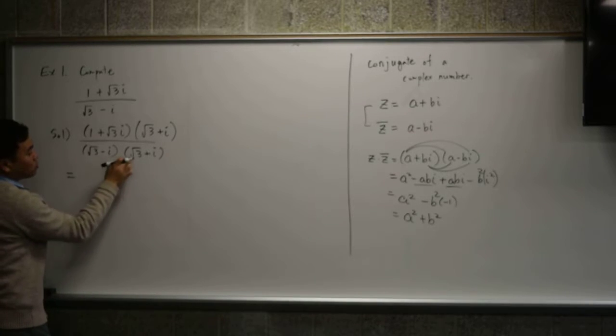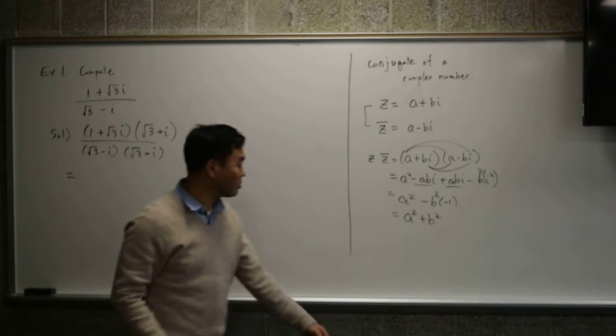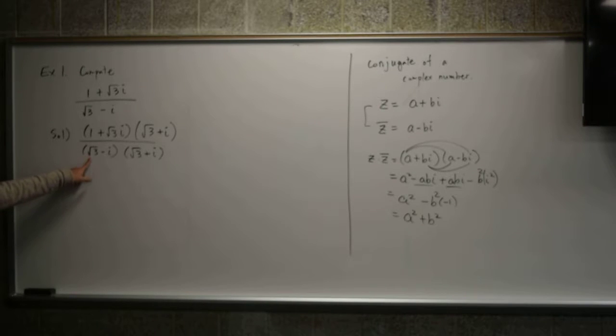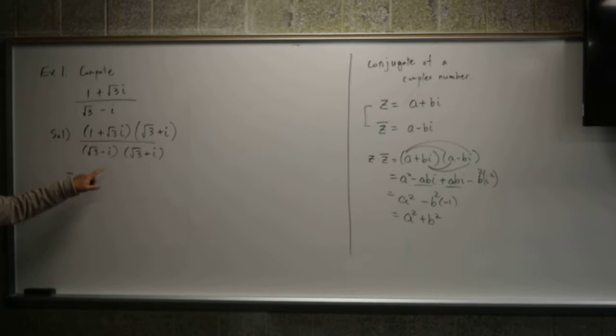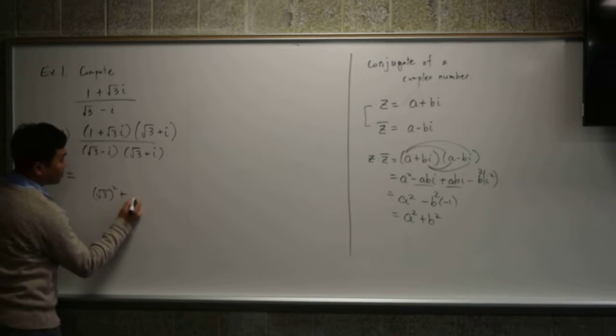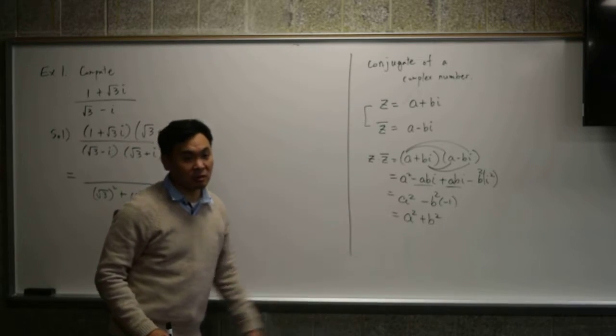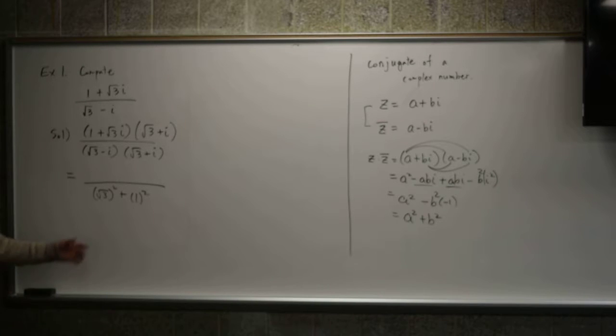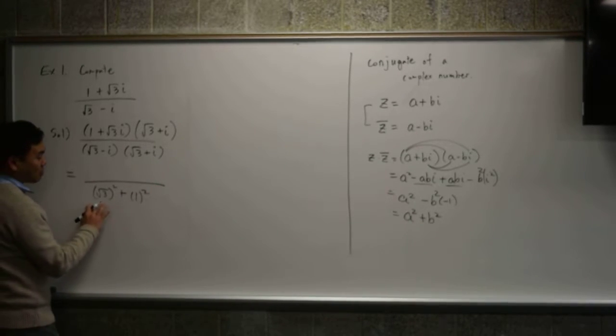Okay. You can either choose to FOIL the denominator or you can use this formula here to shorten your calculation. Since a is √3 and b is equal to 1, you can just square the √3 and then square 1 and that will be your denominator. So I took a shortcut by using this formula, which is what I suggest. But in case you forgot the formula and you don't know what to do, you can just FOIL it out and you will get the same exact answer. So there's no need to worry about whether you remember the formula or not. But I suggest that you try to remember that formula.